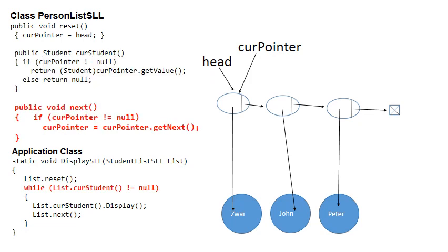The method next simply moves currentPointer along. At the moment, currentPointer is pointing to head, and therefore it needs to move on. When this if statement is applied, currentPointer moves to the next node.